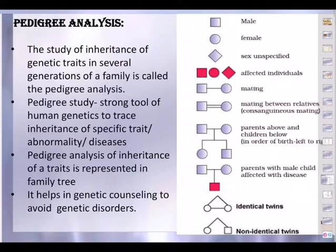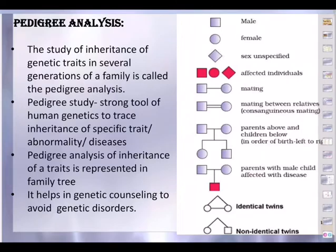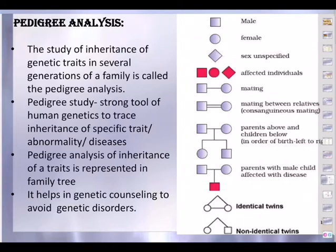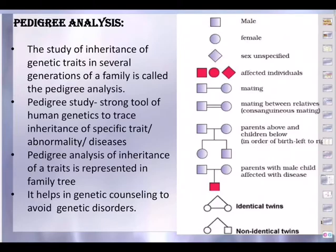Consanguineous mating means both the male and female are related to each other — for example, a maternal uncle's daughter or son marrying someone in the family. When a square is linked to a circle and below them we put a dash and then another square or circle, this represents parents above and children below. The order of birth goes from left to right — seniority is always left to right. Normal parents can give birth to a child shown as shaded, indicating the child is affected with a genetic disorder.